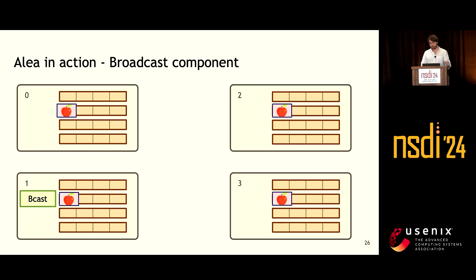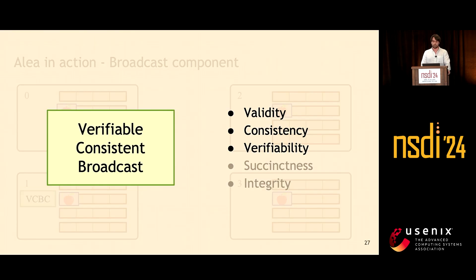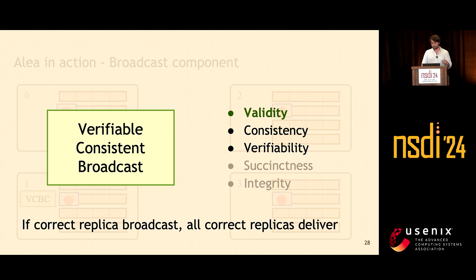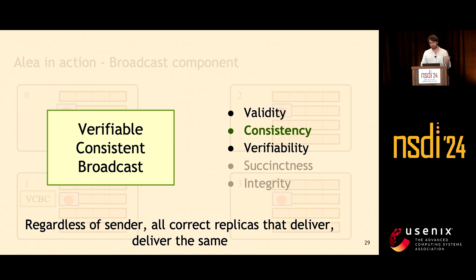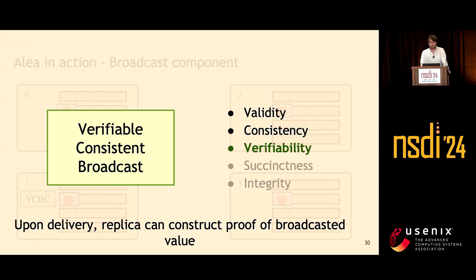For the broadcast component, we use a specific variant called Verifiable Consistent Broadcast, which needs to fulfill five properties. Validity means that if a correct replica broadcasts a transaction, then all correct replicas will eventually deliver it. Consistency means that if a correct replica delivers M and another delivers M prime, then M must equal M prime. Verifiability means that if a correct replica delivers M for a given broadcast instance, it is able to construct a proof that M is the correct output and show that proof to other correct replicas that haven't delivered, making them deliver M for that instance.